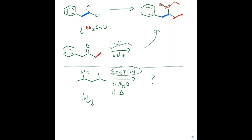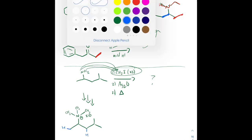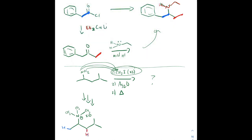Remember, excess methyl iodide means we're adding a methyl group to the nitrogen as many times as we can until we get an ammonium salt. Now the Ag2O — that silver oxide base — comes along and removes a proton to give an alkene. This is going to be the least substituted alkene, so the terminal hydrogen is the one that's way easier to access. The proton drawn in blue gives us that terminal alkene.